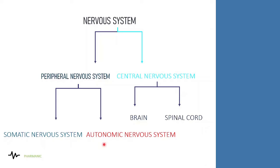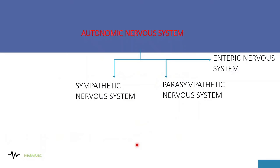The autonomic nervous system is a part of the peripheral nervous system. It is basically divided into three main sub-groups: the sympathetic nervous system, the parasympathetic nervous system, and the enteric nervous system.